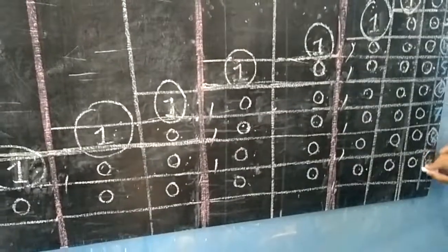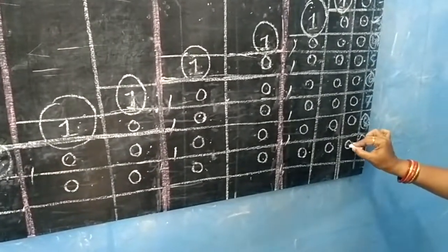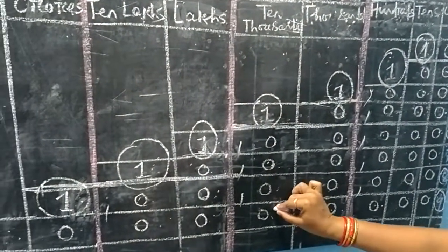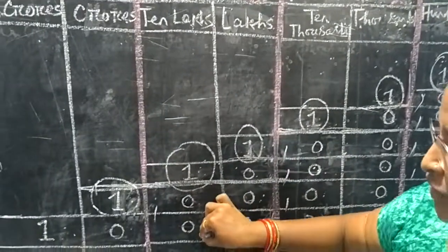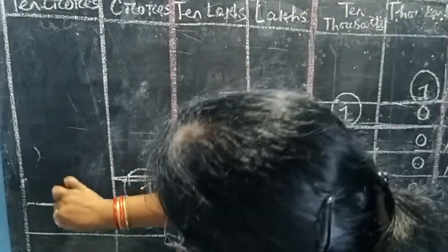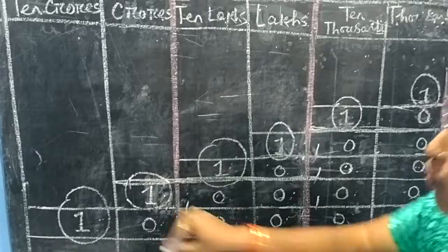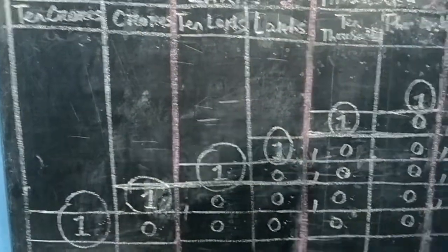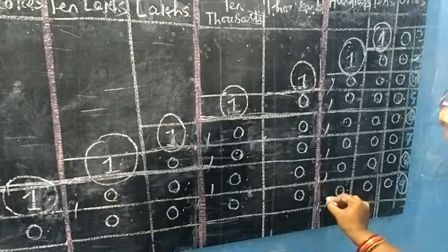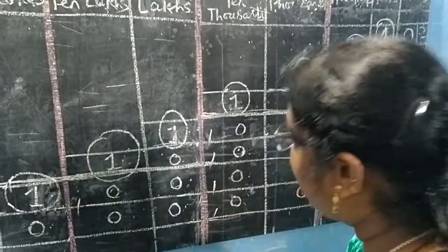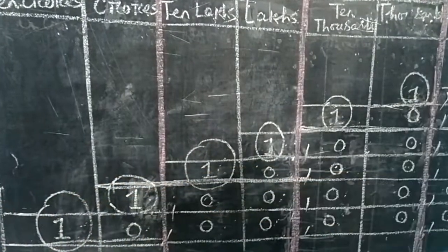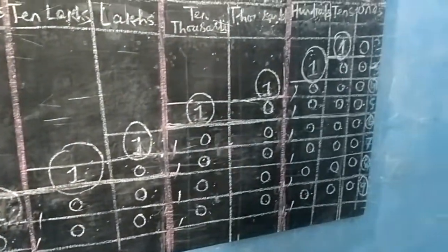In a 9-digit number, we write: 1, 0 1s, 0 10s, 0 100s, 0 1000s, 0 10,000s, 0 lakh. In this place, the place value of 1 is 10 crore. As usual, we separate 1s from 1000s — we put a comma — thousands from lakh — we put a comma — lakh from crore — we put a comma. In the place of crore, we write 10, so we speak 10 crore.